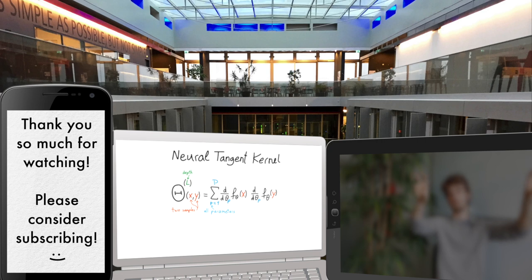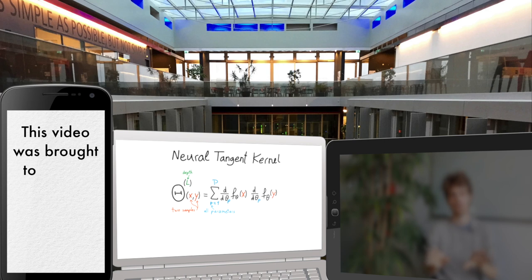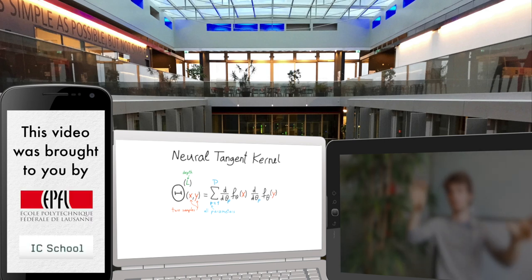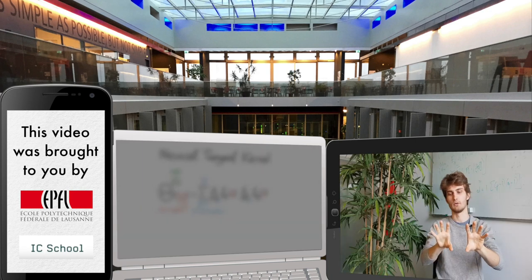What we have observed can be nicely described by a kernel, the Neural Tangent Kernel. It is defined in terms of the derivative of the function with respect to the parameters, and it describes how modifying the network function at a point X will influence another point Y.